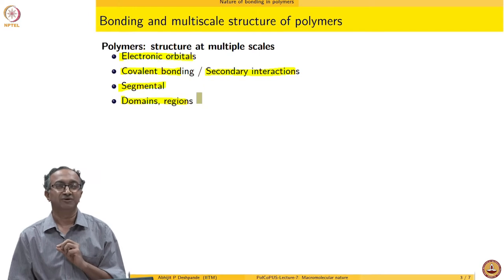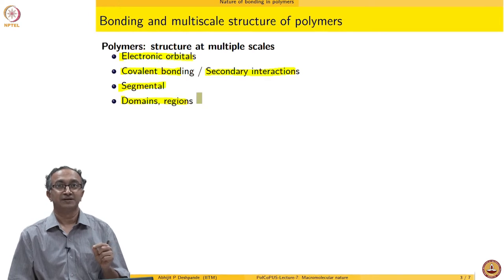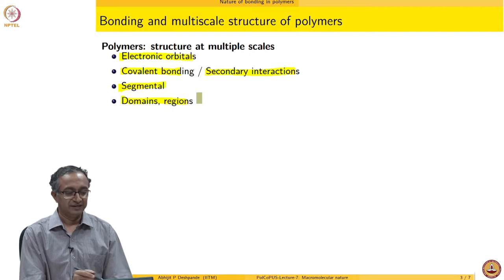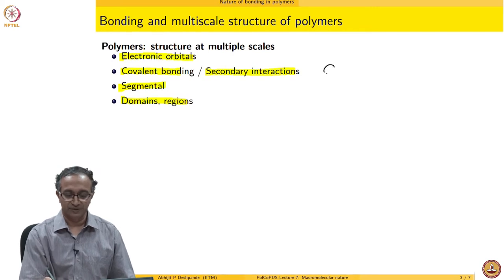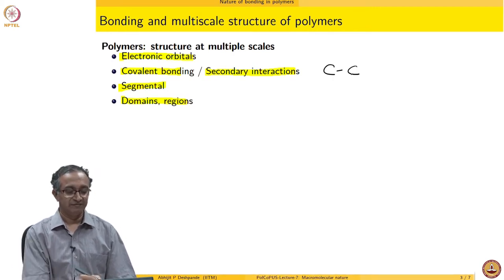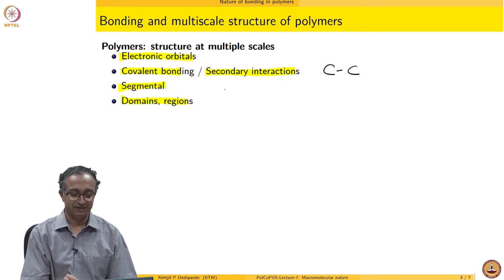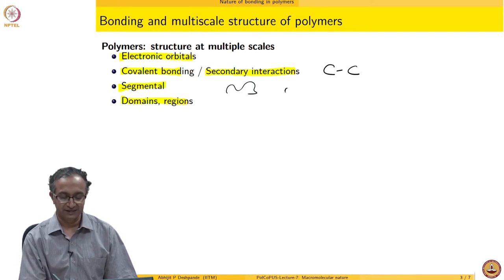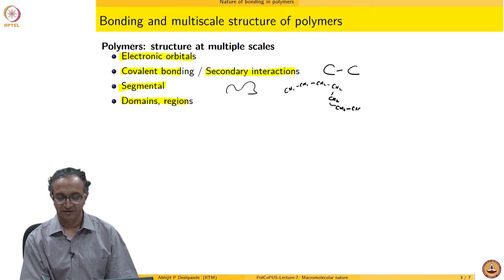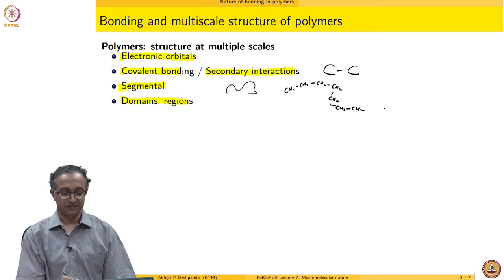The electronic orbital — what is the dimension of an individual atom and subatomic features? You can look up what is the length scale. Then we have the covalent bond — the carbon-carbon bond. What is the length scale associated with a carbon-carbon bond? Then we talk about a segment. In the case of polyethylene, a segment will basically be some CH2, CH2, CH2 going along. This is called a segment of a polymer. If it is a polyester like PET, it will have CO and benzyl rings. So we indicate it using a segment — that is another scale.